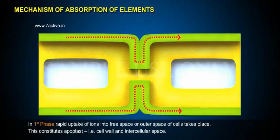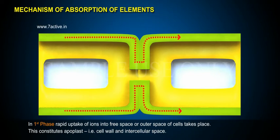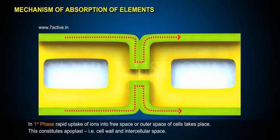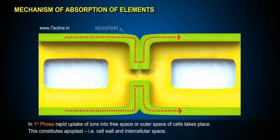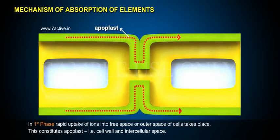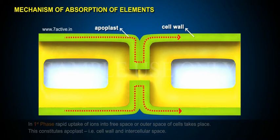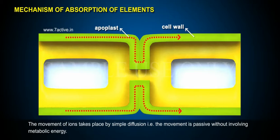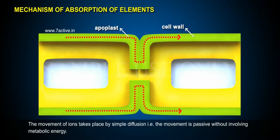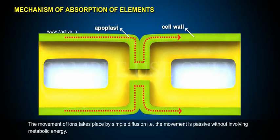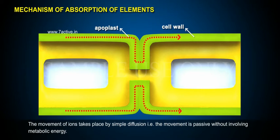In the first phase, rapid uptake of ions into the free space or outer space of cells takes place. This constitutes the apoplast, that is, the cell wall and intercellular space. The movement of ions takes place by simple diffusion, that is, the movement is passive without involving metabolic energy.